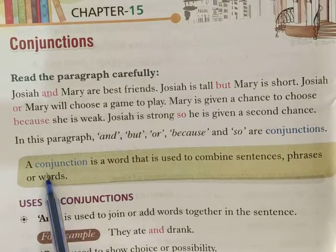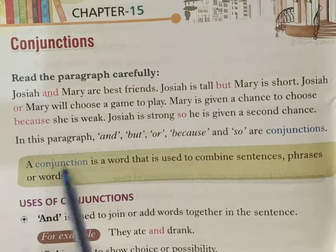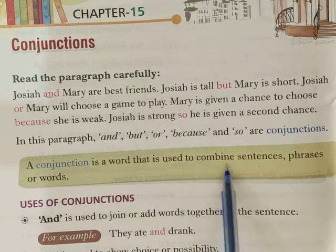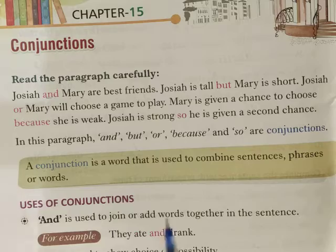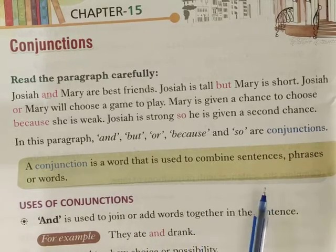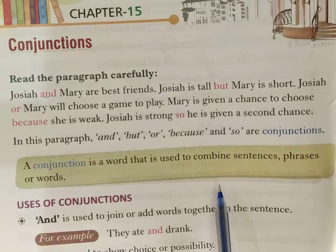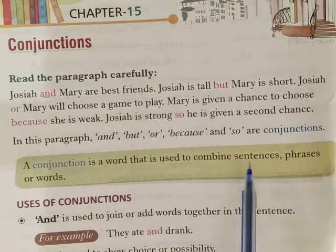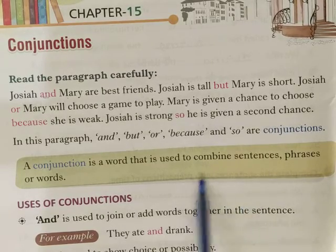Let's have a look at the definition of conjunction. A conjunction is a word that is used to combine sentences, phrases, or words. Conjunctions are words that join two sentences, two phrases, or two words together.